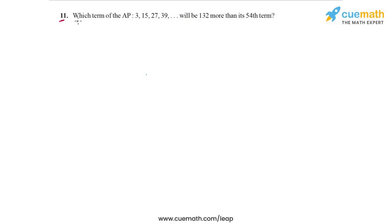The problem statement in question 11 is: which term of the AP 3, 15, 27, 39, and so on will be 132 more than its 54th term? We are given this AP and we know the exact parameters because we know the first term, which is 3, and we know the common difference, which is the difference between any pair of successive terms, so that's 12.